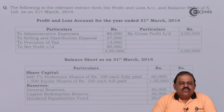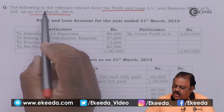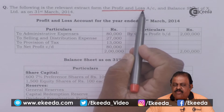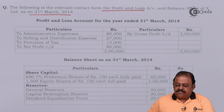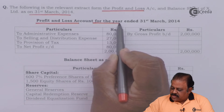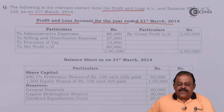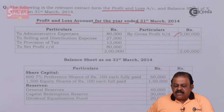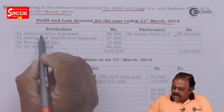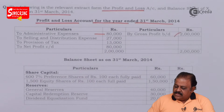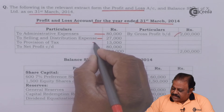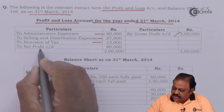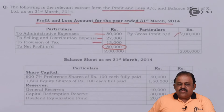Let us understand return on proprietors fund ratio with the help of a small example. The following is a relevant extract from the profit and loss account and balance sheet of X Limited as on 31st March 2014. Gross profit is rupees 2 lakhs. Administrative expenses: rupees 80,000; selling and distribution expenses: rupees 27,000; provision for taxation: rupees 13,000; net profit carried down: rupees 80,000.